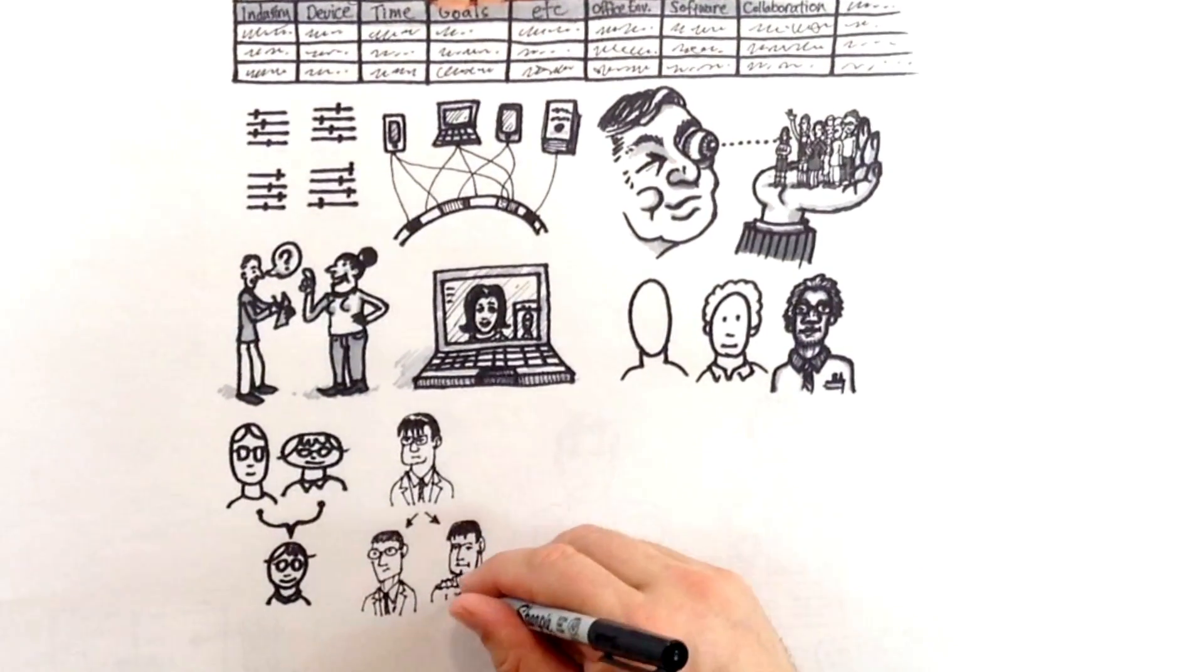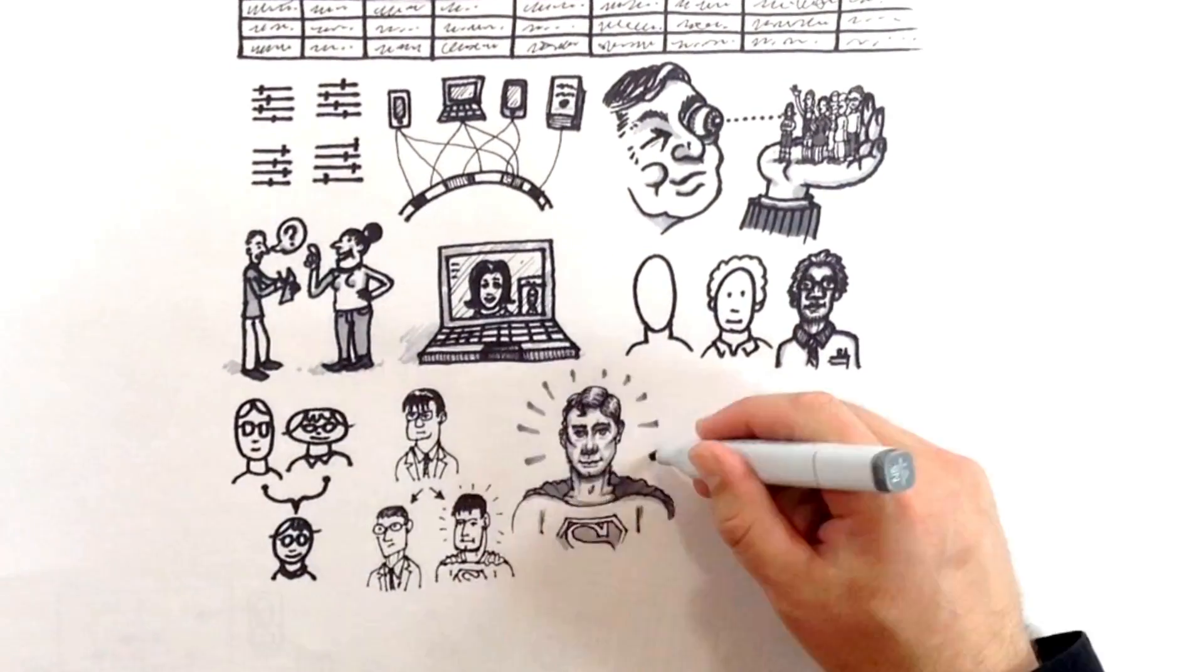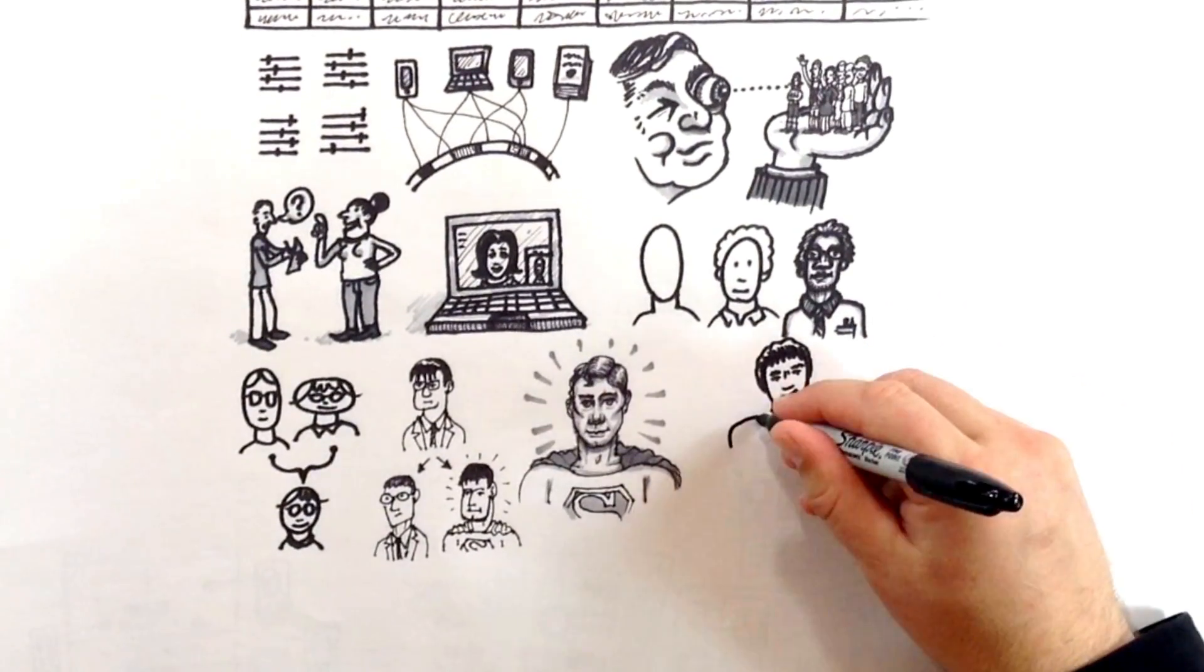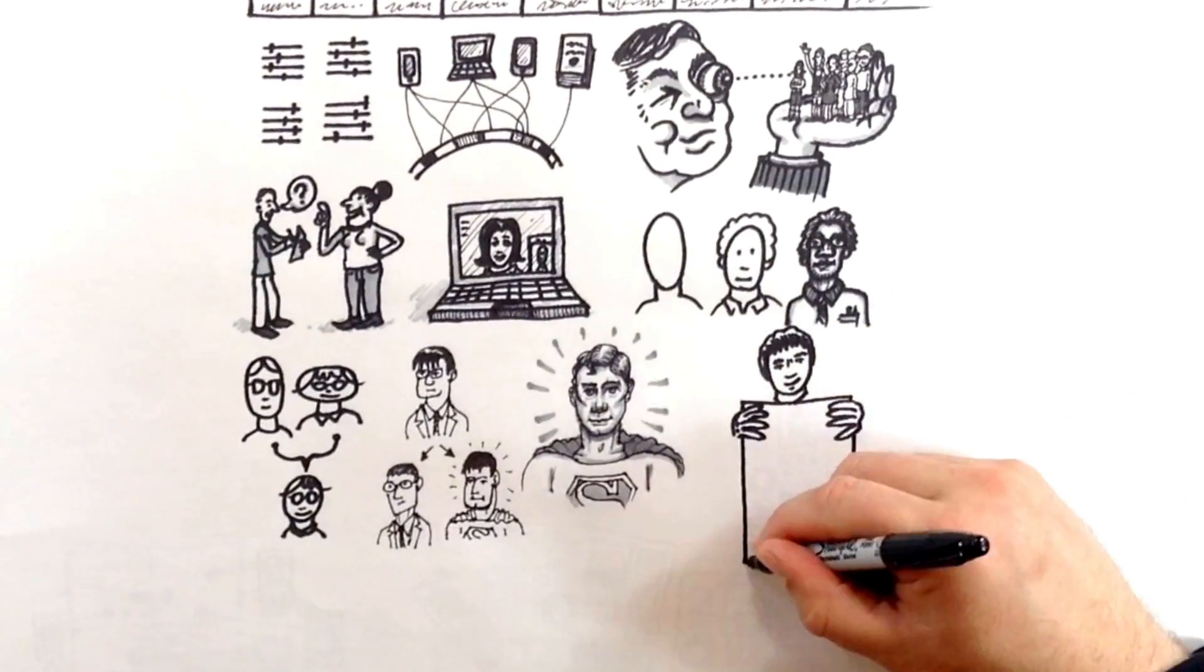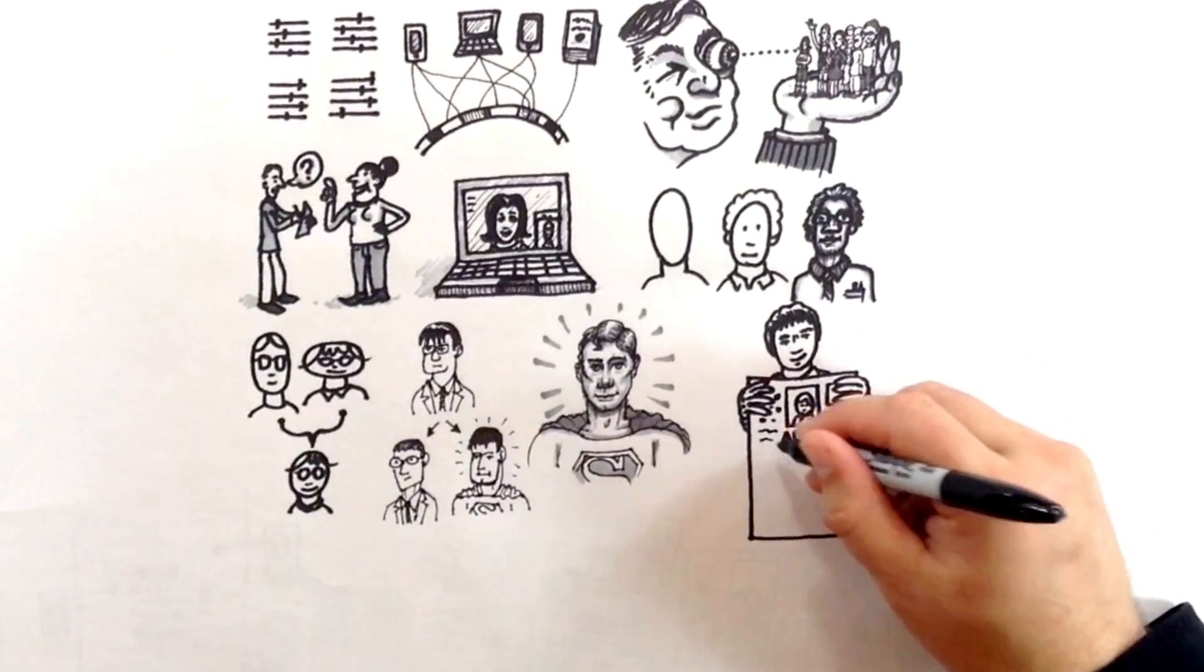Creating personas is an iterative process. What seems right at first glance may not hold up to close scrutiny. Now it's time to come up with names and representations for these personas. Your representation might be a photo, an illustration, or an icon. The important part is that these personas be distinct and memorable.